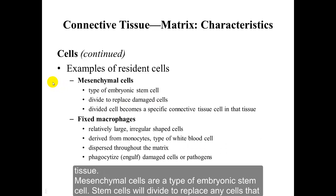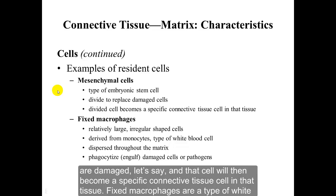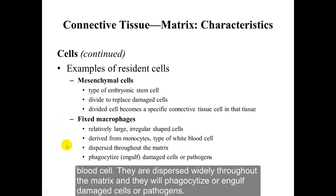Mesenchymal cells are a type of embryonic stem cell. Stem cells will divide to replace any cells that are damaged, and that cell will then become a specific connective tissue cell in that tissue. Fixed macrophages are a type of white blood cell. They are dispersed widely throughout the matrix, and they will phagocytize or engulf damaged cells or pathogens.